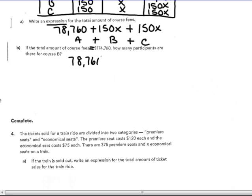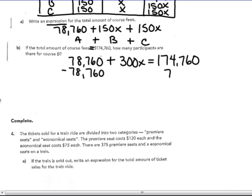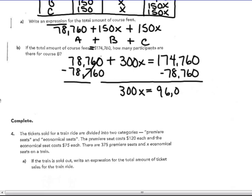So my A plus my B and C I'm going to add together because those are like terms. So $78,760 would be 300X. Altogether for all three courses, $174,760. So subtracting $78,760 from both sides, I get 300X equals 96,000. I'm doing 96,000 divided by 300, which X equals 320. How many participants are there for course B? So there are 320 participants in course B.